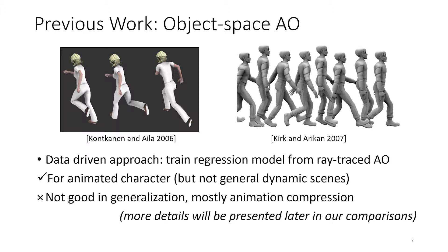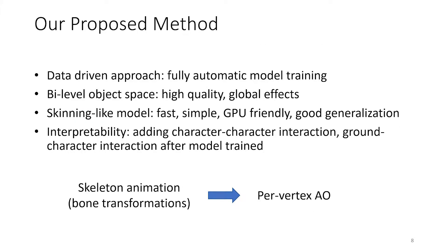Our model is in this category. It's a data-driven approach and includes a fully automated training setup. It's a bi-level object-based approach which produces high-quality global effects as well as local detail. It's a skinning-like model which lends itself to fast, simple, and GPU-friendly implementation. It handles poses well that are not in the training set, and its interpretability allows for modes of operation not seen during training, such as character-to-character interaction and ground-to-character interaction.